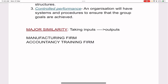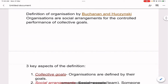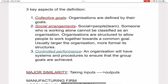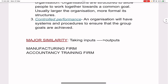The third aspect is controlled performance. In order to achieve any goal or objective, we need a certain set of systems and procedures to ensure that the group goals are achieved. Revising the definition by Buchanan and Huczynski: collective goals means the entire organization has a goal they are working towards; social arrangements means a team of people working to achieve those goals; and controlled performance means there are systems and procedures in place to ensure group goals are achieved.